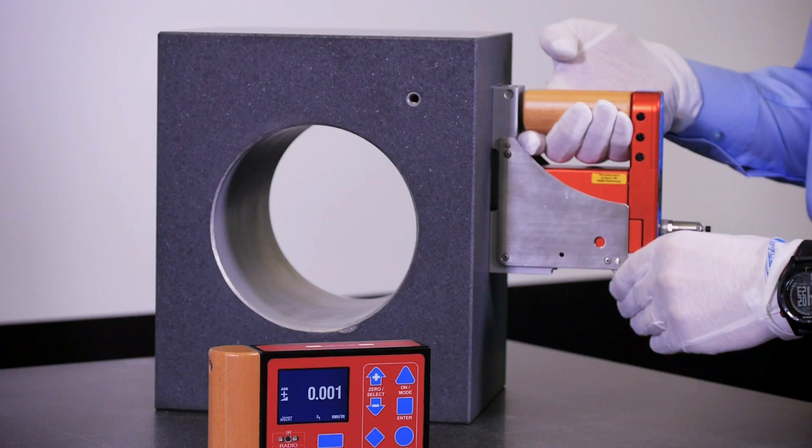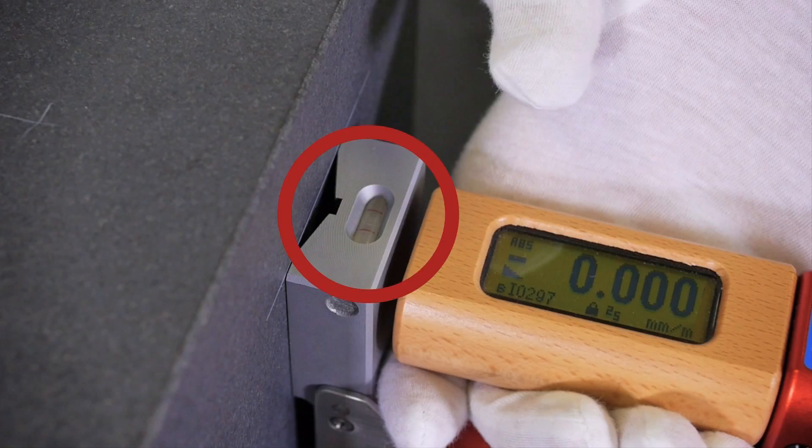It's important to hold the instrument vertically. We can use the cross vial to verify this.